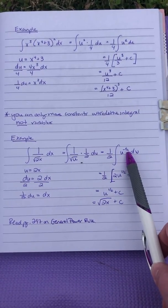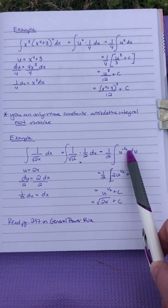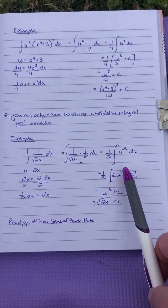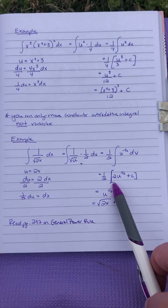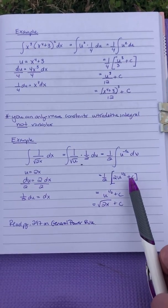Okay, so now you take the antiderivative of that. The antiderivative of u to the negative one half is u to the one half, and then we're going to multiply it by 2 plus c.